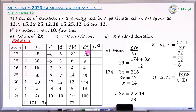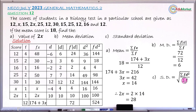Multiplying each D² by the corresponding frequency: 36×4 = 144, 9×2 = 18, 4×1 = 4, 49×2 = 98, 144×1 = 144, 16×1 = 16, 100×1 = 100. Summing these gives ΣFD² = 524. With ΣF = 12, the standard deviation = √(524 / 12) = √43.67 ≈ 6.6.